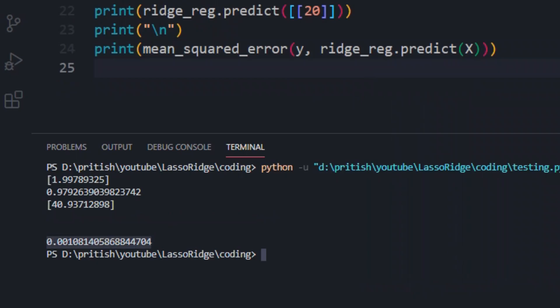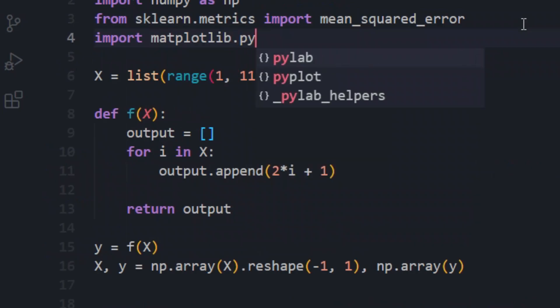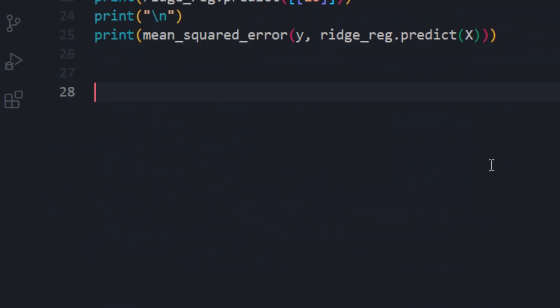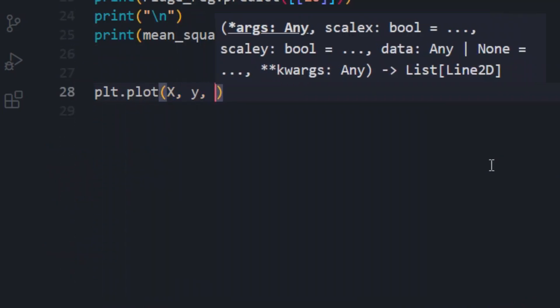The mean squared error is 0.001 which is too good. Let us plot our prediction and see how well ridge regression has fitted to our data.